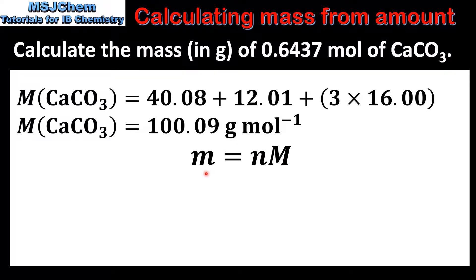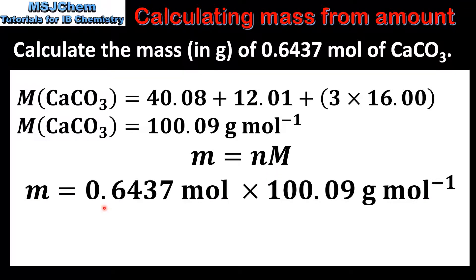Next we'll use the equation mass in grams equals amount in moles multiplied by the molar mass. So the amount in moles is 0.6437 and the molar mass is 100.09 grams per mole. And this gives us a mass of 64.43 grams.